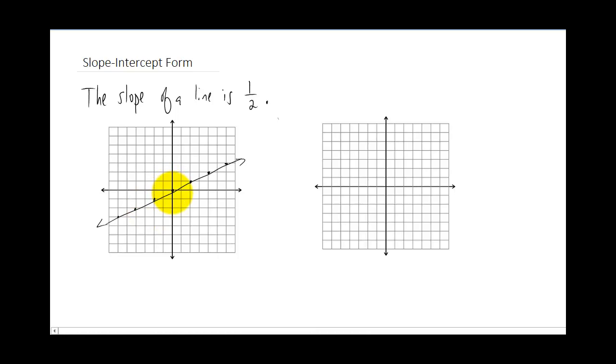But there was no reason for me to start right here at the origin. I could have started at any point. If I started at the point, say, zero, two, I could draw a line with a slope of one half, and it would look something like this. And you'll quickly realize that there are actually an infinite number of lines that have a slope of one half.